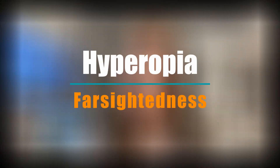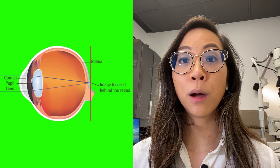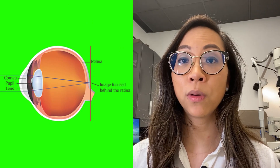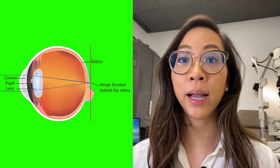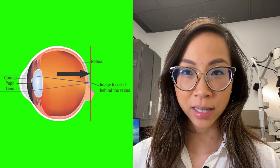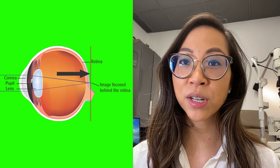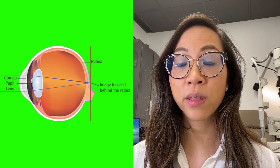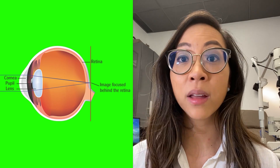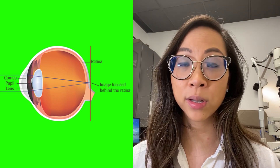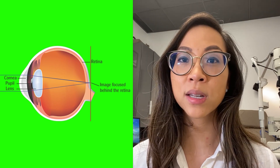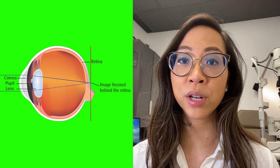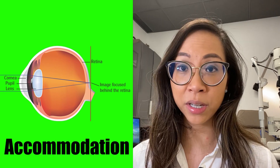Secondly, hyperopia or farsightedness. As light comes in at a distance from an object, the rays will focus in front of the retina causing a blurry image. Typically, this is because the patient's eyeball is shorter. The accessory eye muscles then have to work to reshape the crystalline lens so that the light focuses onto the back of the retina for a clear image. This process is called accommodation.